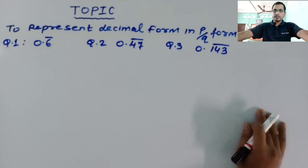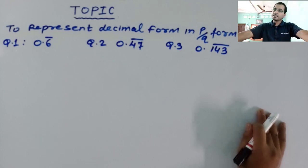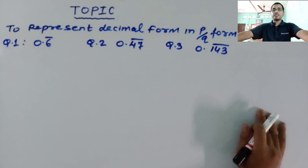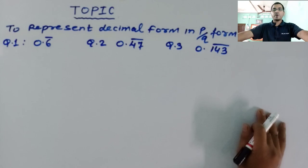We discussed terminating decimal expansion, non-terminating decimal expansion, non-terminating recurring decimal expansion, and non-terminating non-recurring decimal expansion. We know how to write a decimal expansion in p by q form, but we don't know how to write decimal expansions which are non-terminating recurring. In today's video lecture, we are going to study how to represent non-terminating recurring decimal expansion in p by q form.